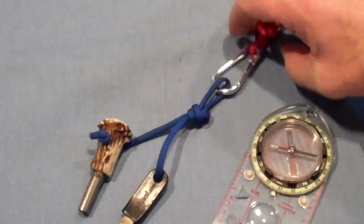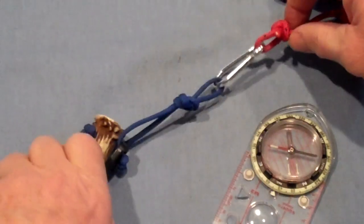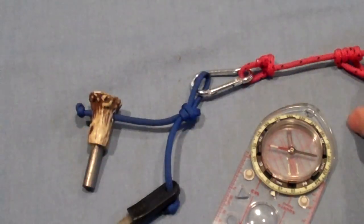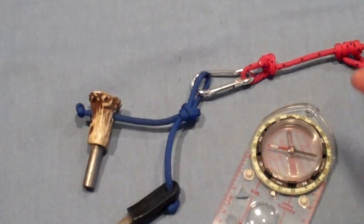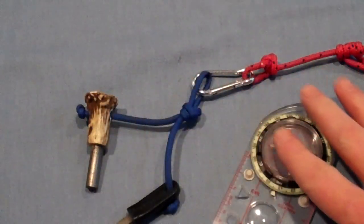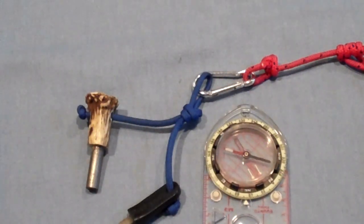Now, you can clip anything onto your lanyard, and I'd recommend that every time you use your survival tools, especially if you're in deep snow. Always make sure that whatever you've got on your lanyard is not going to affect your compass needle.